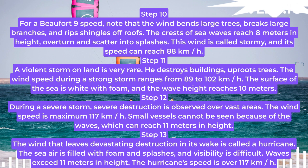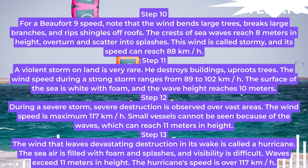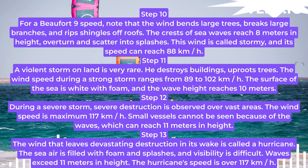Step 11. A violent storm on land is very rare. It destroys buildings and uproots trees. The wind speed during a strong storm ranges from 89 to 102 km/h. The surface of the sea is white with foam, and the wave height reaches 10 m.